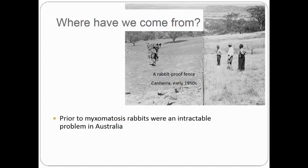Rabbits became a serious environmental and agricultural pest in Australia almost as soon as they started spreading from their point of introduction in the 1850s.